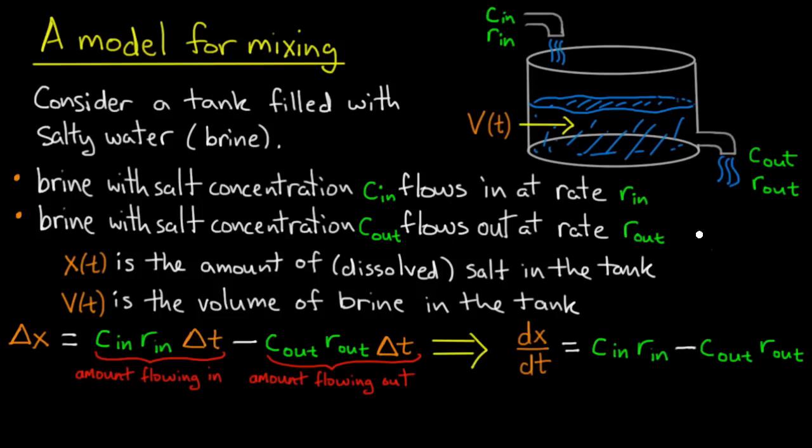Suppose that before we begin to conduct this mixing experiment, we mix up a bucket of brine off to the side ahead of time. That's the brine that I'm going to pour into the tank. So by mixing it ahead of time I got to control the concentration in. I got to control C_in. And by pouring it into the tank I got to control r_in.